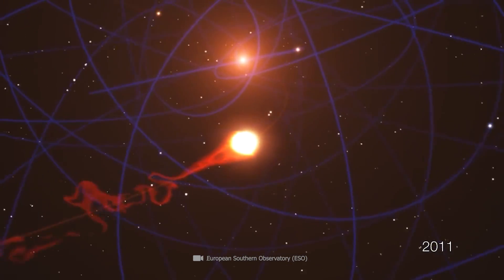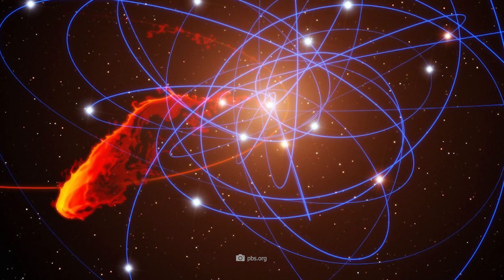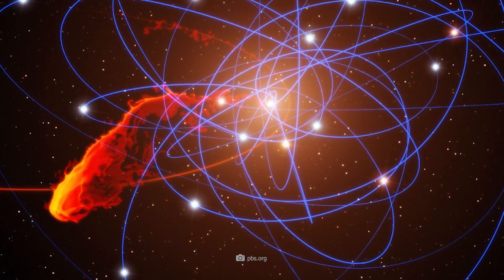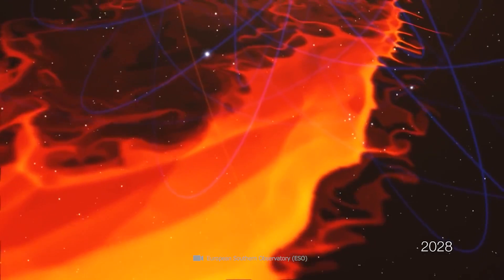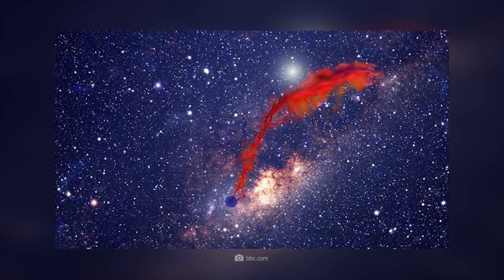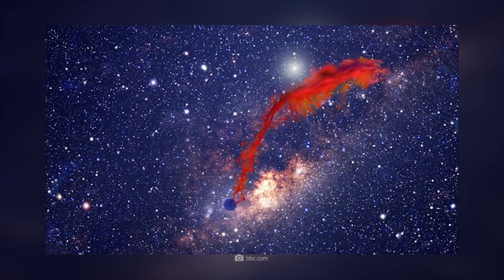By all appearances, G2 was heading straight for Sagittarius A star. Two years after its first discovery, large parts of the gas cloud drifted to within about 16 billion miles of the supermassive black hole. In the course of the immense forces that then acted on G2, the object was pulled apart.